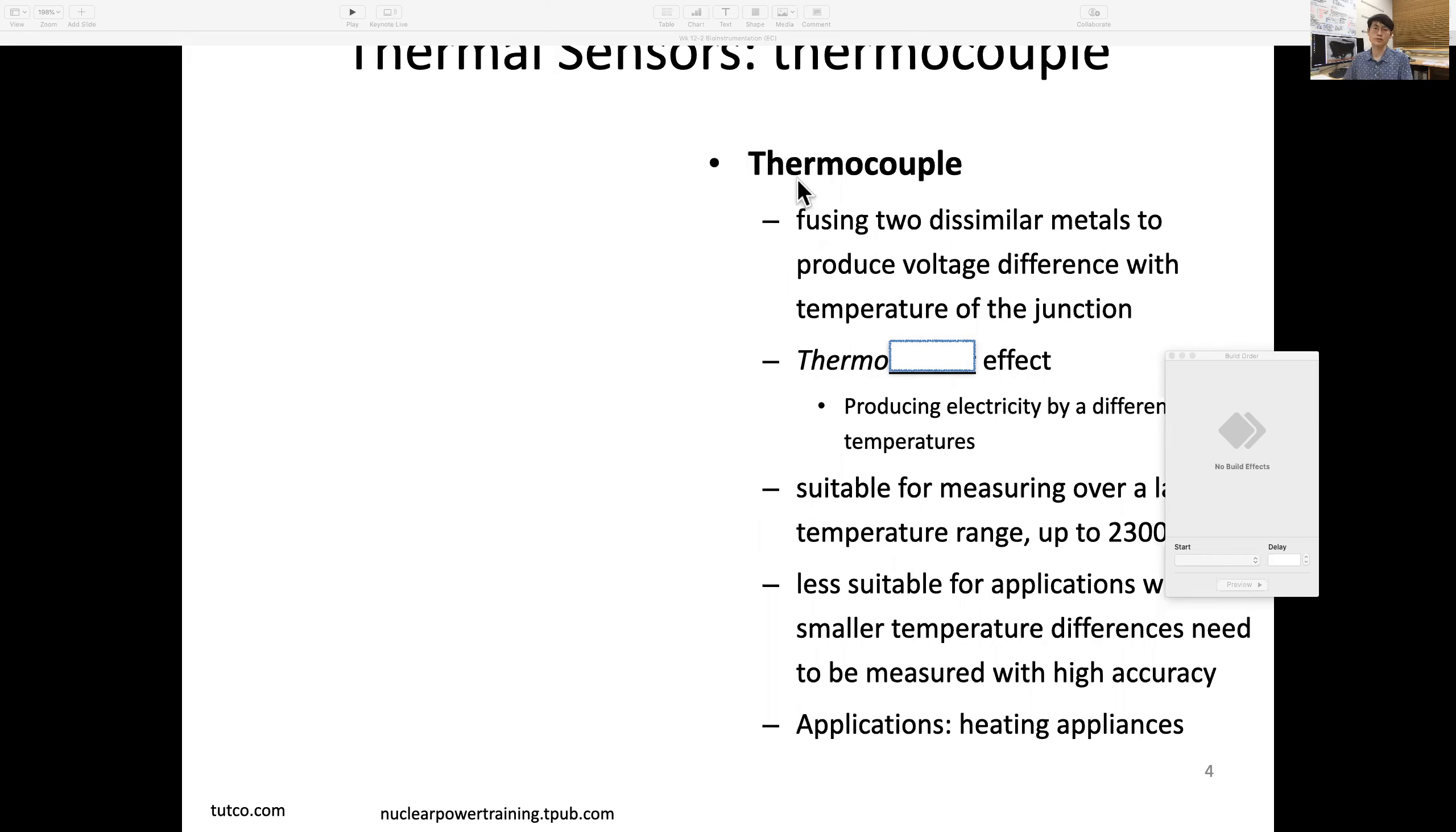The first thing I want to discuss is a thermocouple, which uses bi-metal—fusing two dissimilar metals to produce a voltage difference with temperature at the junction. This is called the thermoelectric effect, generating electricity by temperature difference.